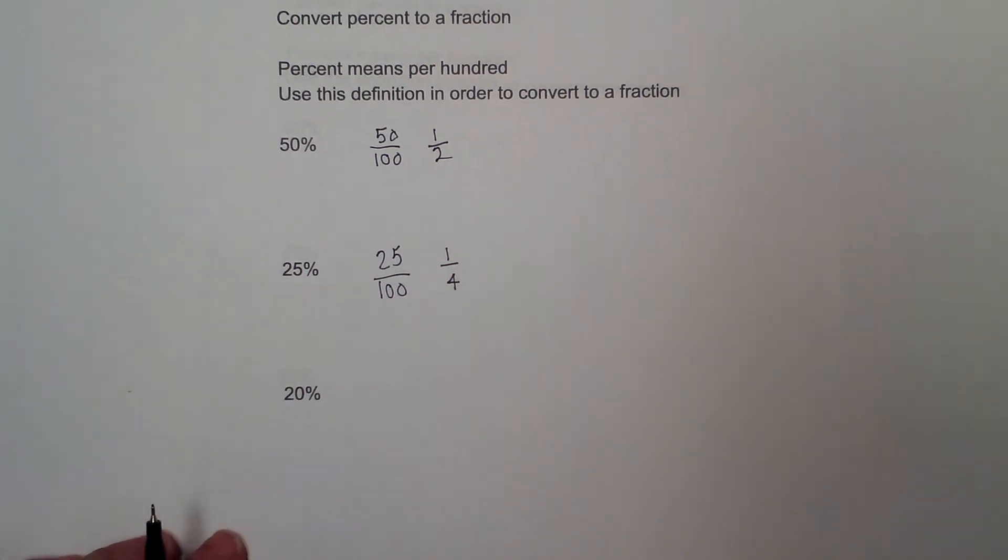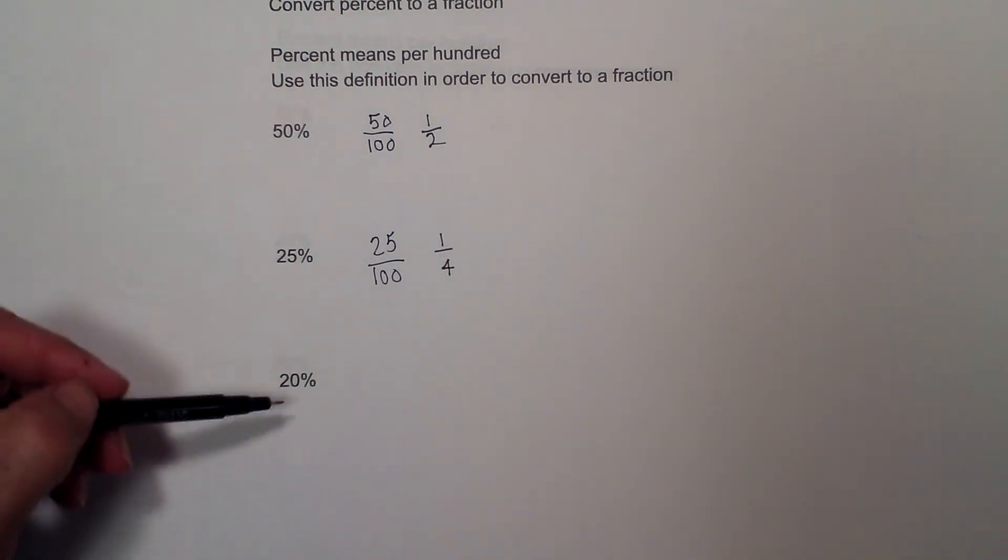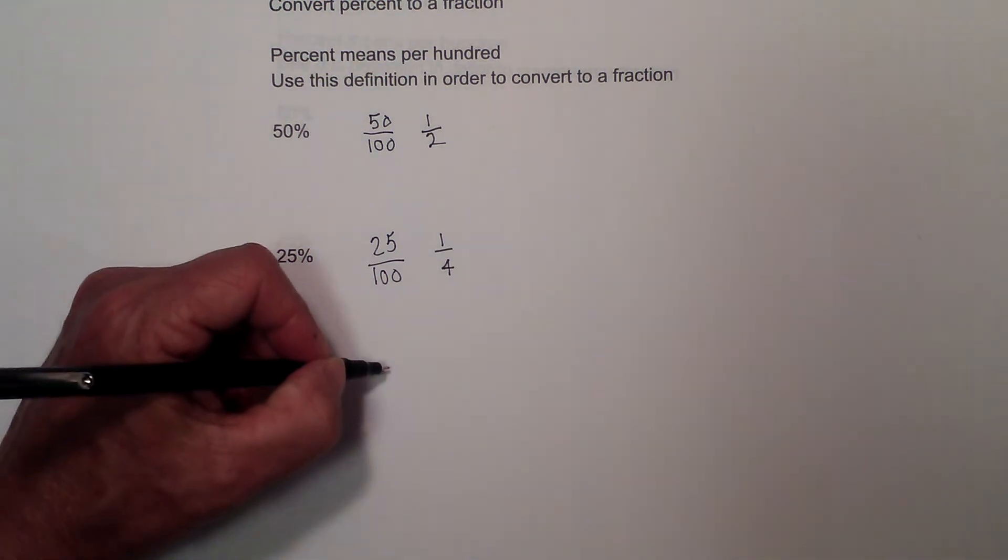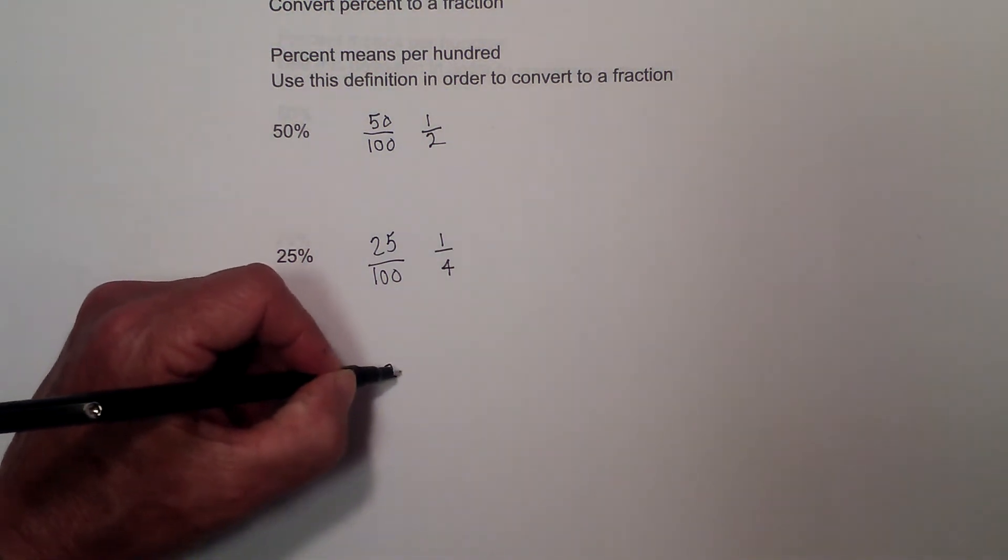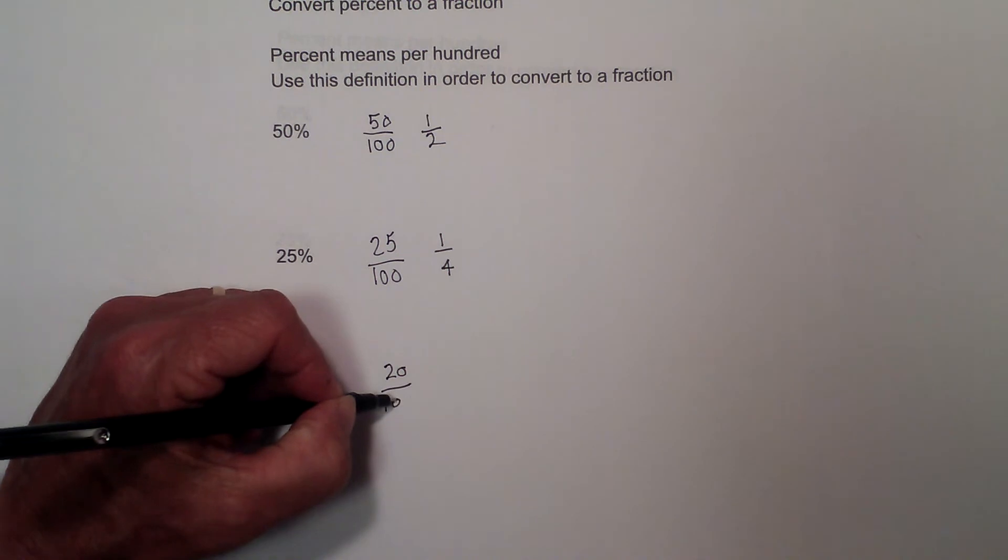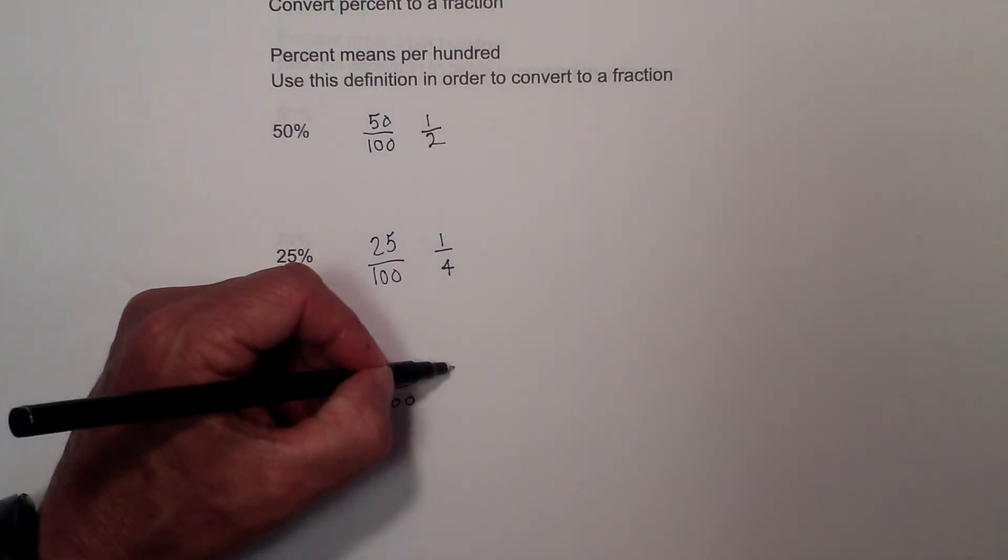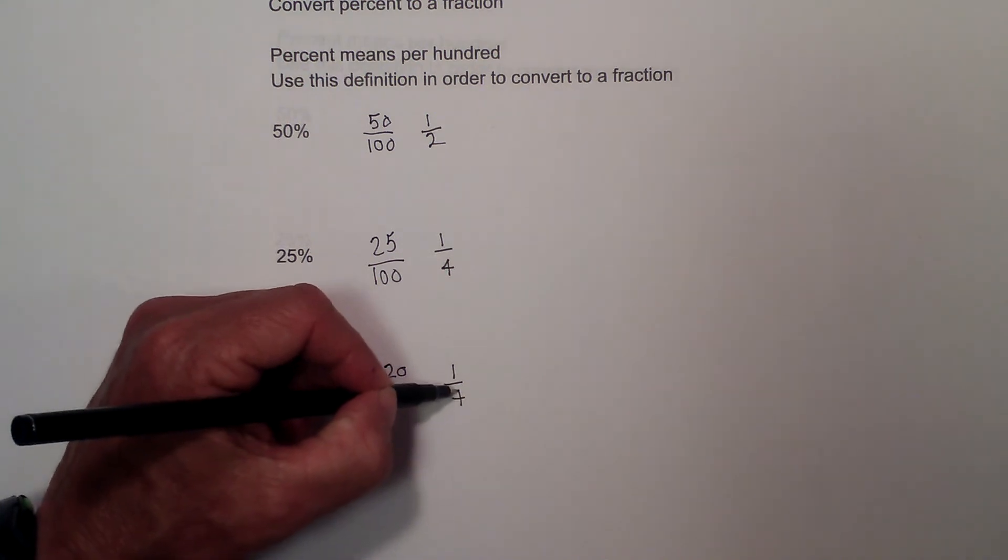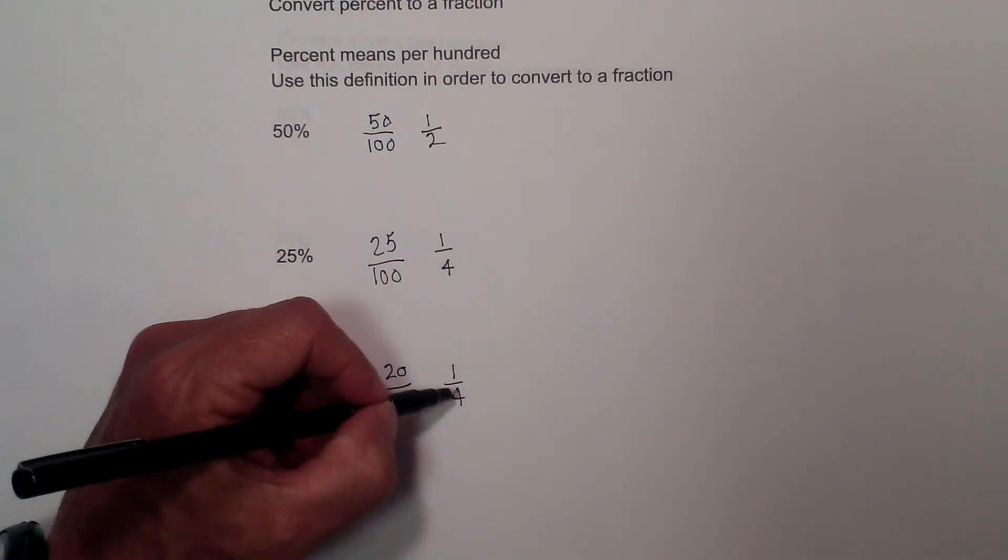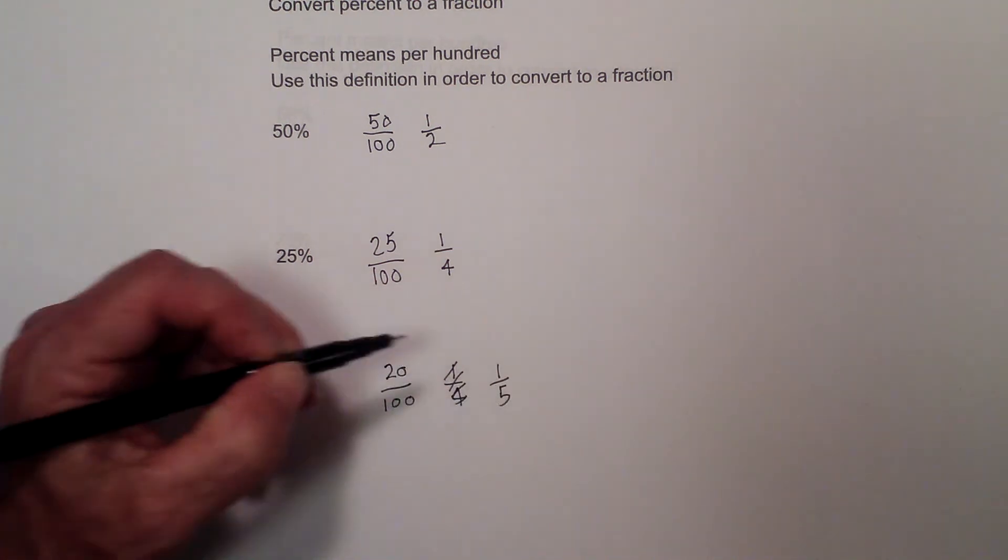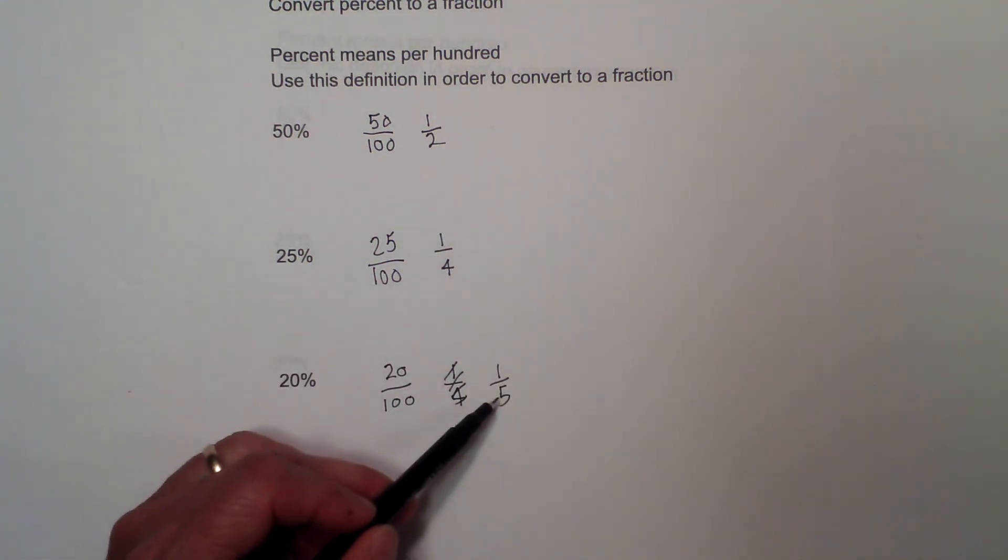And finally let's move down to 20%. Remember 20% just means per 100, so I'm going to go 20 over 100. And I can further reduce this into a fraction which is one fifth because 20 goes into 100 five times.